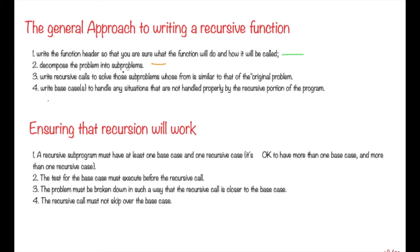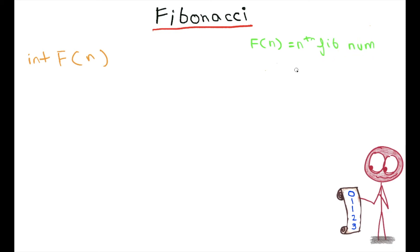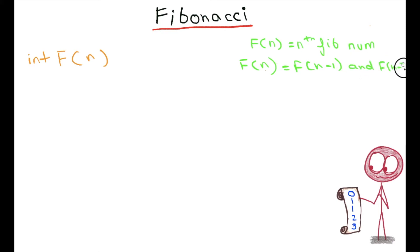The second step is to decompose the problem into subproblems. Here the problem is to find f(n), which gives the nth Fibonacci number. To calculate f(n), we have to calculate f(n-1) and f(n-2).